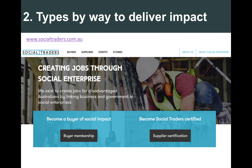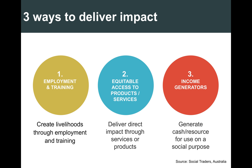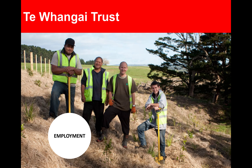Our second taxonomy is types by way of delivering impact. This comes courtesy of Social Traders, who developed this taxonomy — they're based in Australia. The taxonomy breaks social enterprises down into three categories relating to how they deliver impact: firstly, employment and training — creating livelihoods through employment and training; secondly, social enterprises that provide equitable access to products or services; and thirdly, social enterprises that are income generators, generating cash and resources to be used for social purpose.